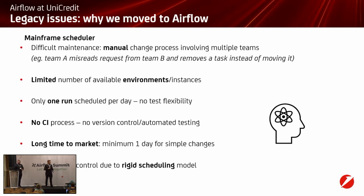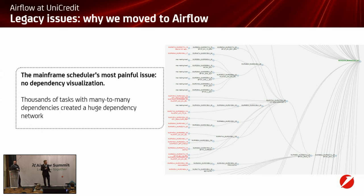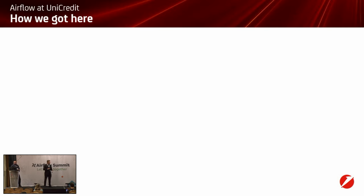The rigid scheduling model is perhaps better illustrated by this slide, where we have a visualization — an attempt to visualize our scheduling network as it was originally. Only a small fragment of it is visible, because by the number of connections you can guess that overall it was impossible to visualize in one screen. Given that we had no dependency visualization and we had thousands of tasks with many-to-many relationships, the resulting network of dependencies was massive. This was another bottleneck, because any analyst who wanted to add a new task to this network would first have to understand the existing scheduling in order to build on it.